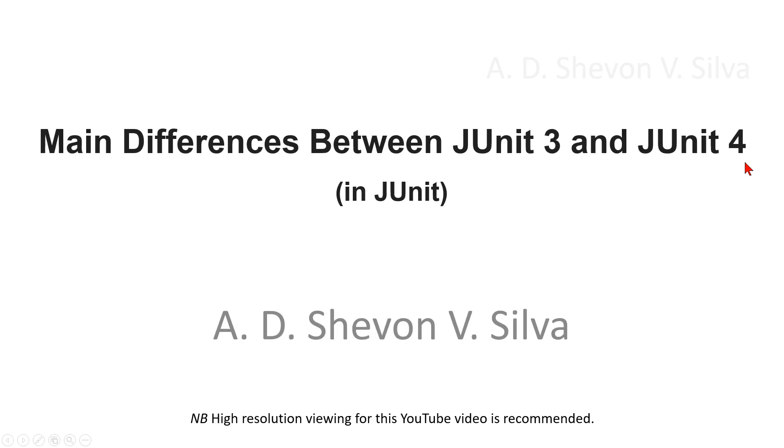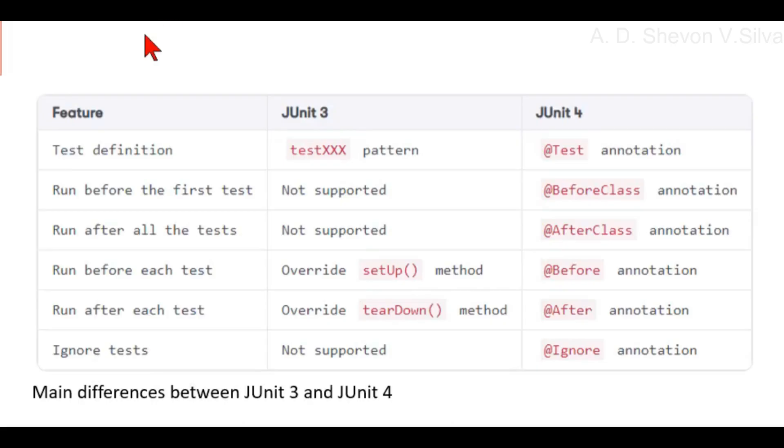Main differences between JUnit 3 and JUnit 4. Here you can see the main differences between JUnit 3 and JUnit 4. In JUnit 4, the @Test annotation contained in the package org.junit represents a test. Any public method can be annotated with @Test to make it a test method.